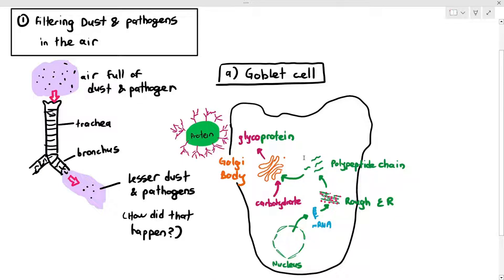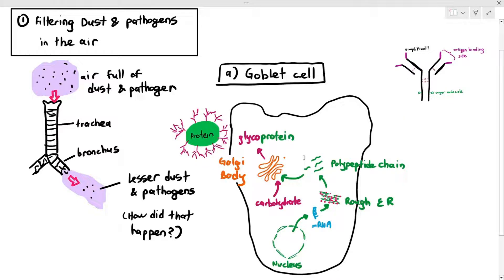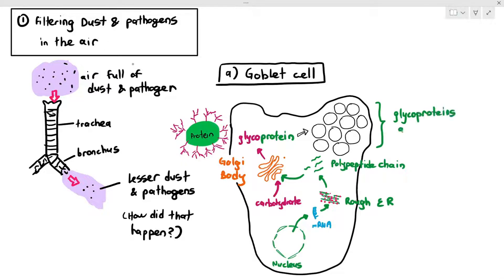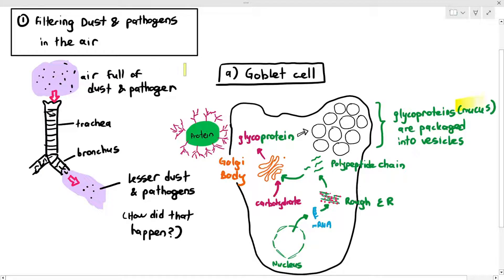That glycoprotein is referred to as mucin. You've already learned about a few types of glycoproteins — you saw glycoproteins on the cell surface membrane in chapter 4, where they act as receptors, and in chapter 11 you learned about antibodies, a specific type of glycoprotein. Now you're learning about mucin or mucus. This particular type of glycoprotein will then be packaged into vesicles by the Golgi apparatus.